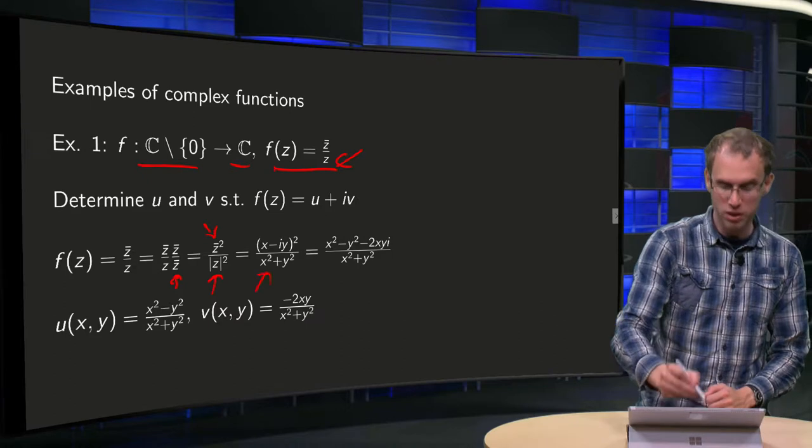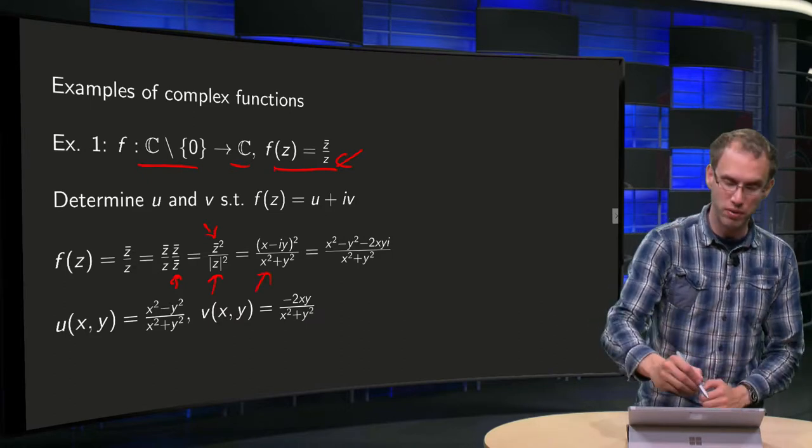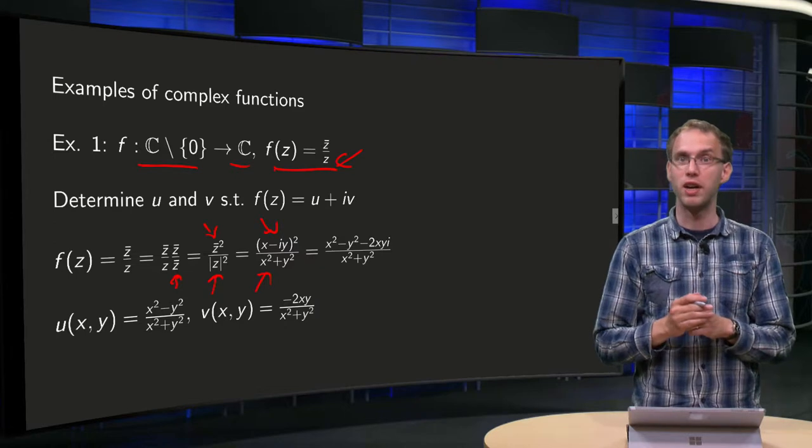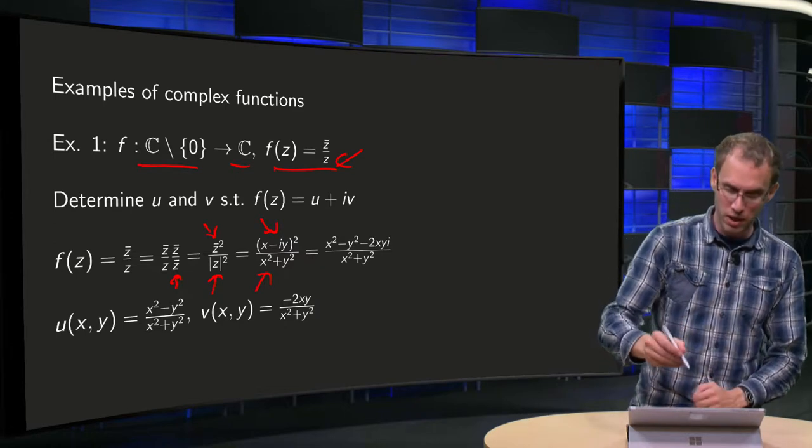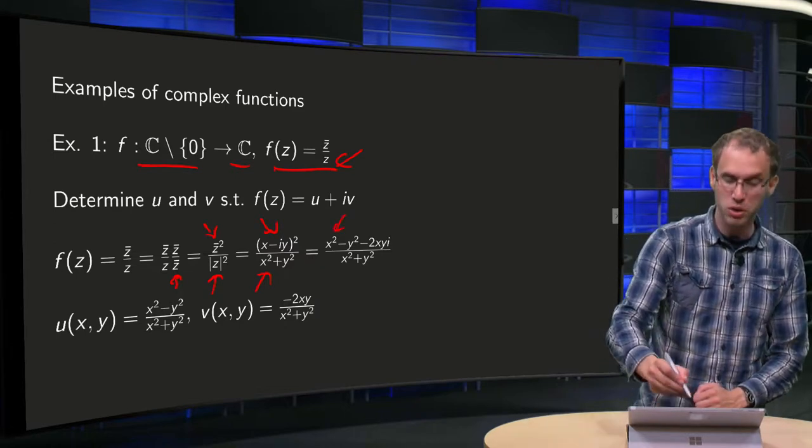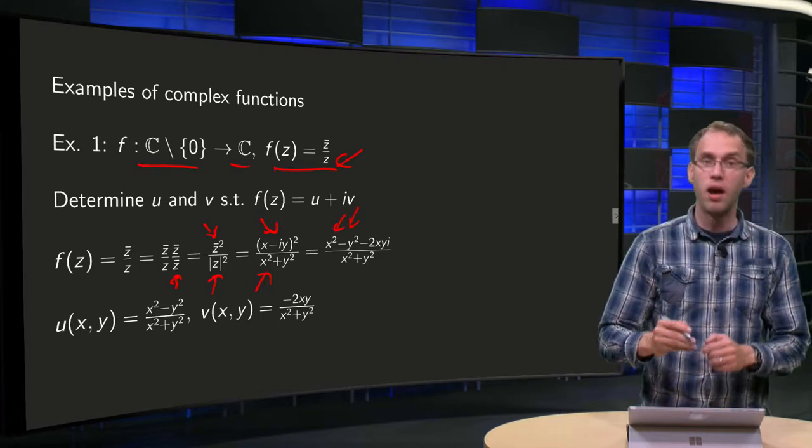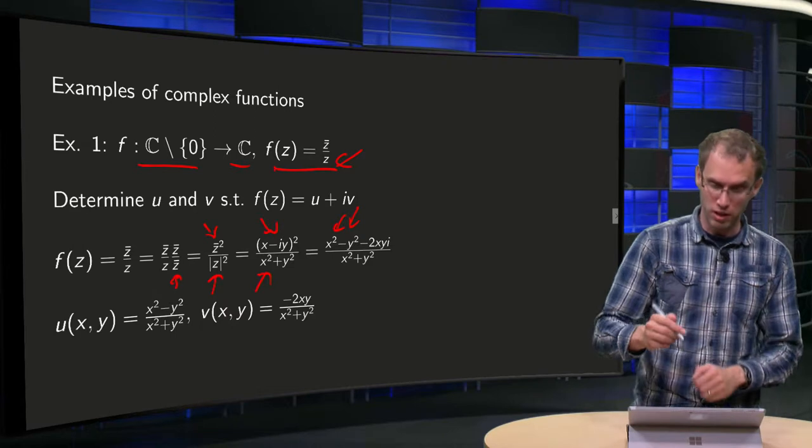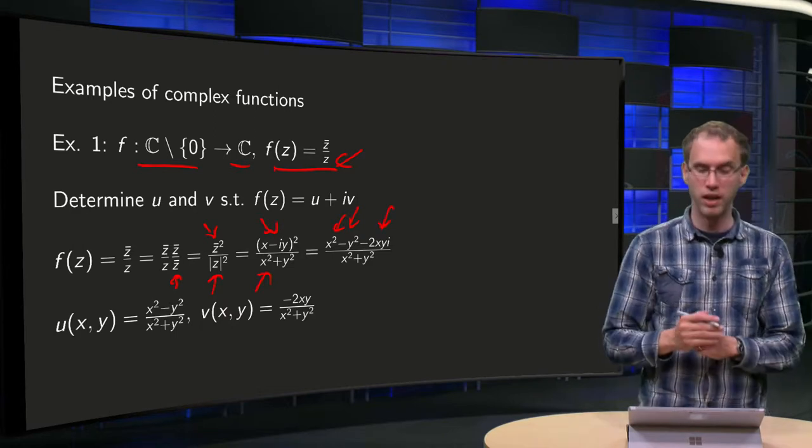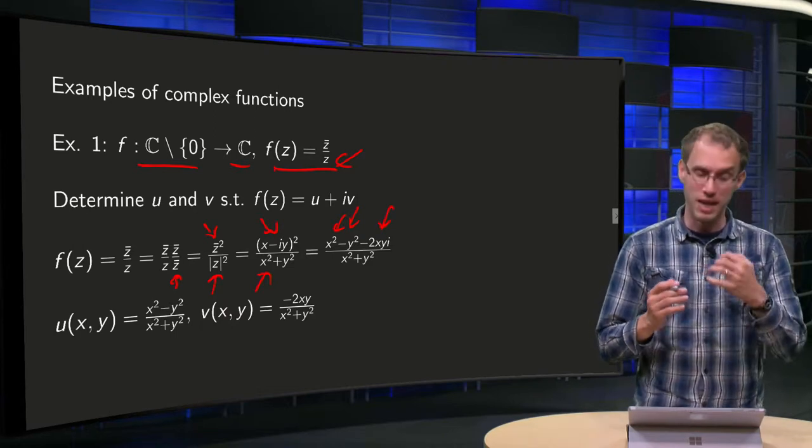Now, after this step, the denominator becomes x² plus y² and in the numerator we get z̄² equals (x minus iy)². To work out the numerator, we get x² plus i²y², so minus y², minus 2 times x times i times y, so minus 2xy times i.